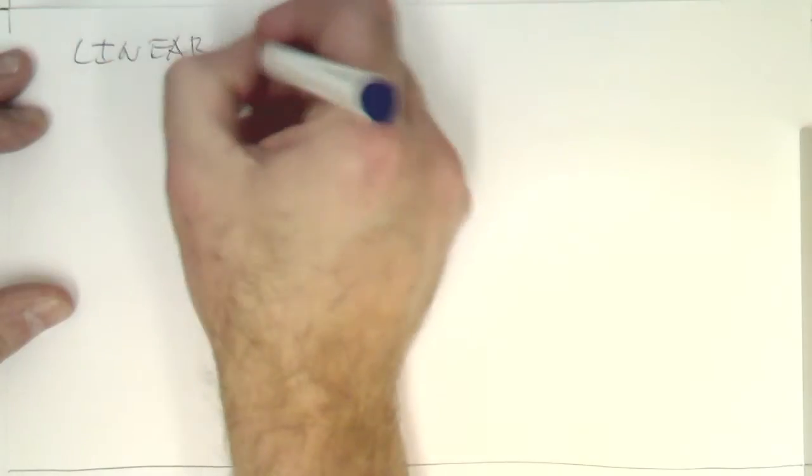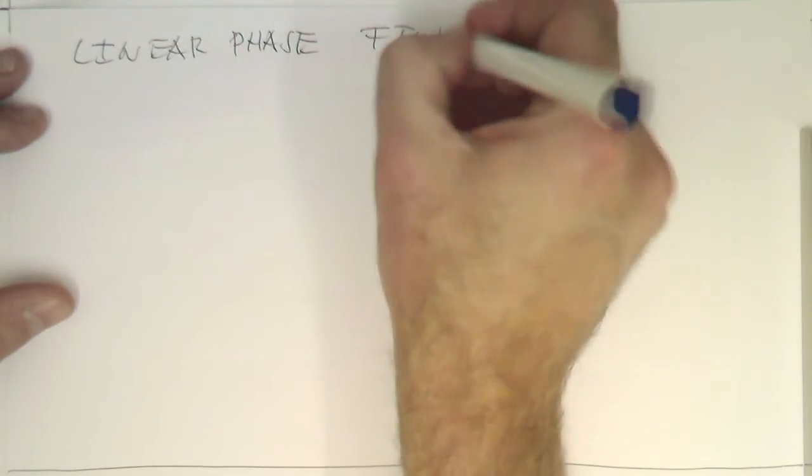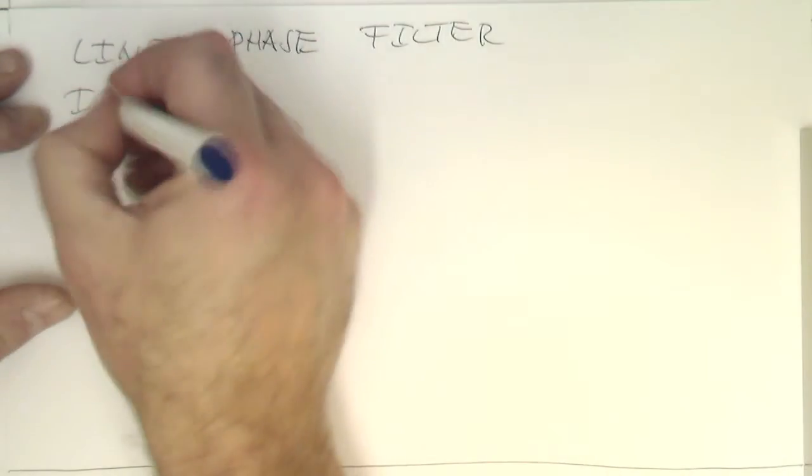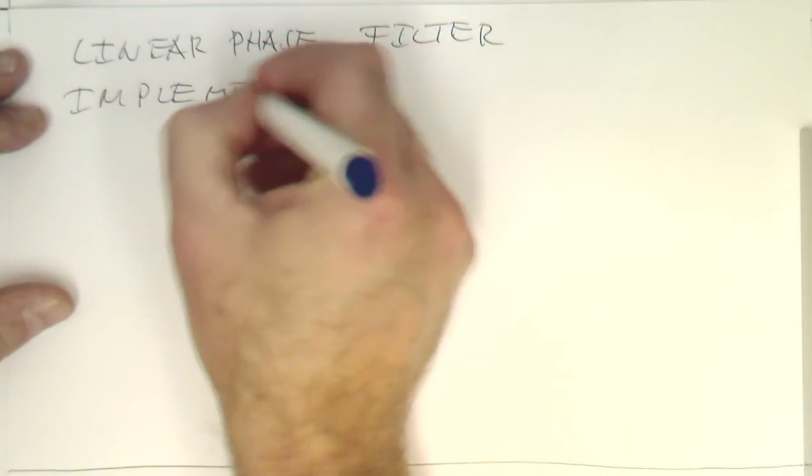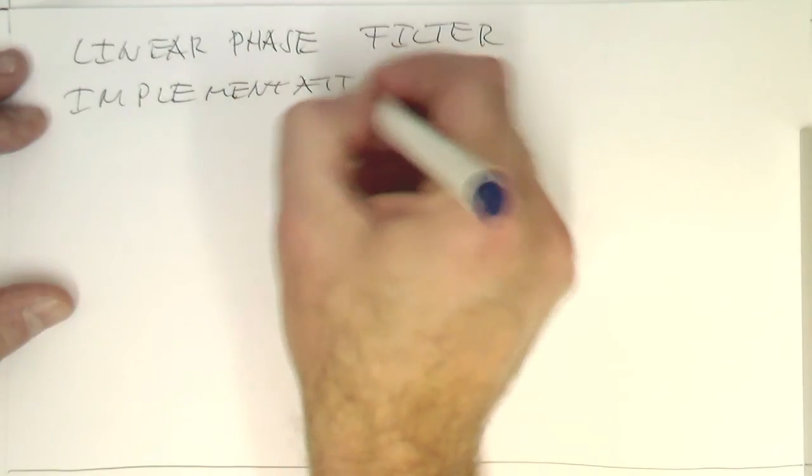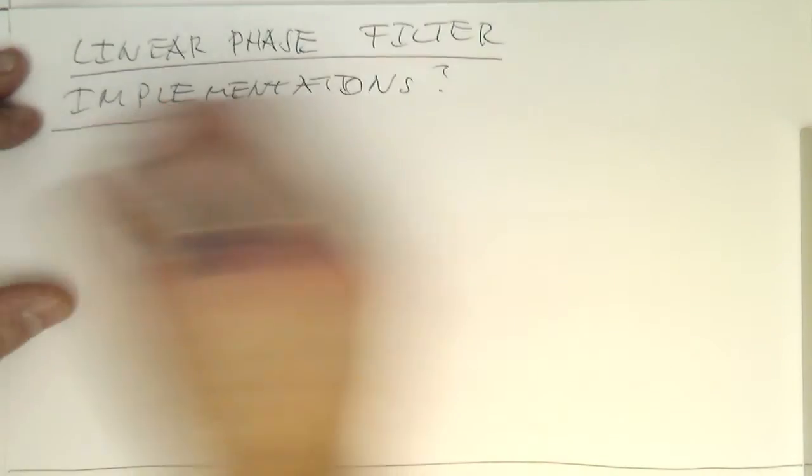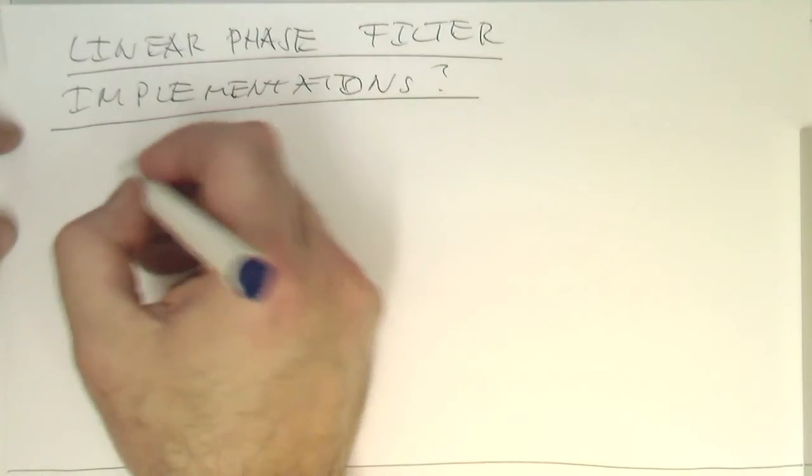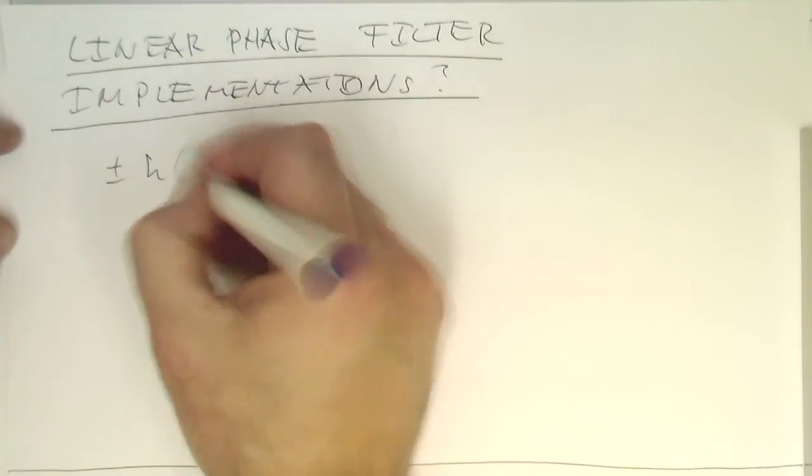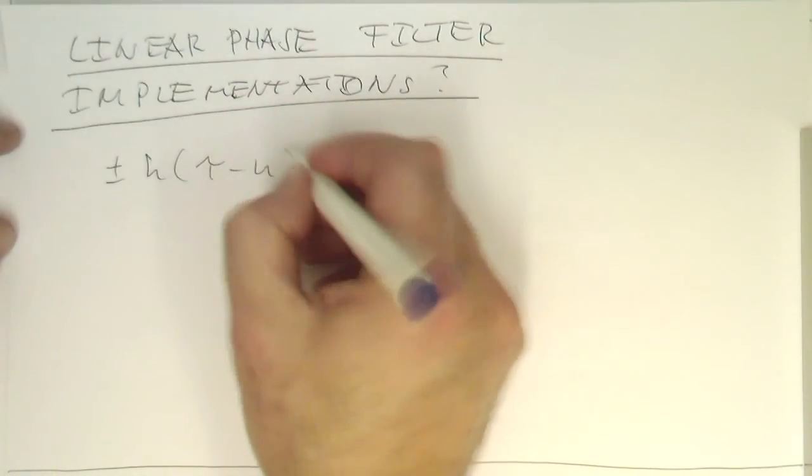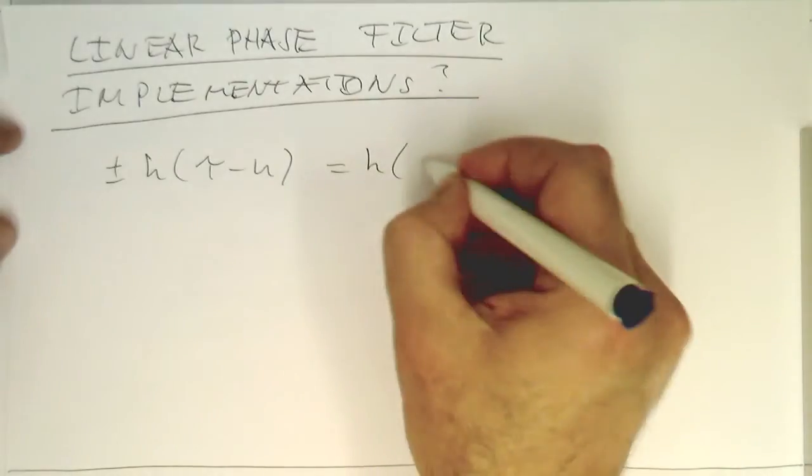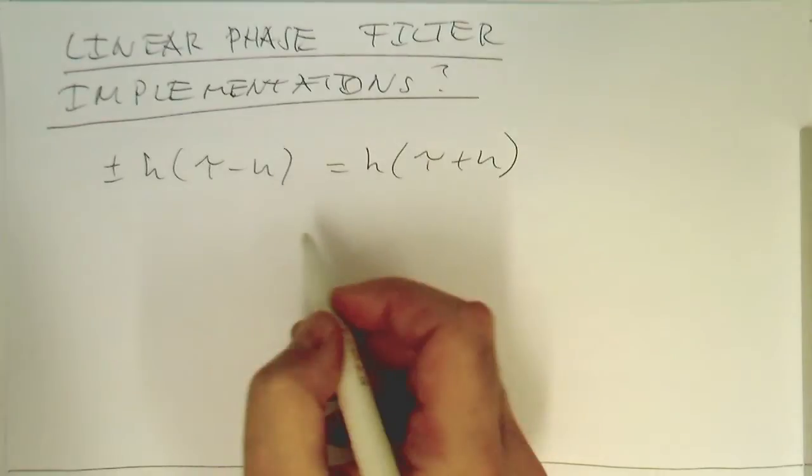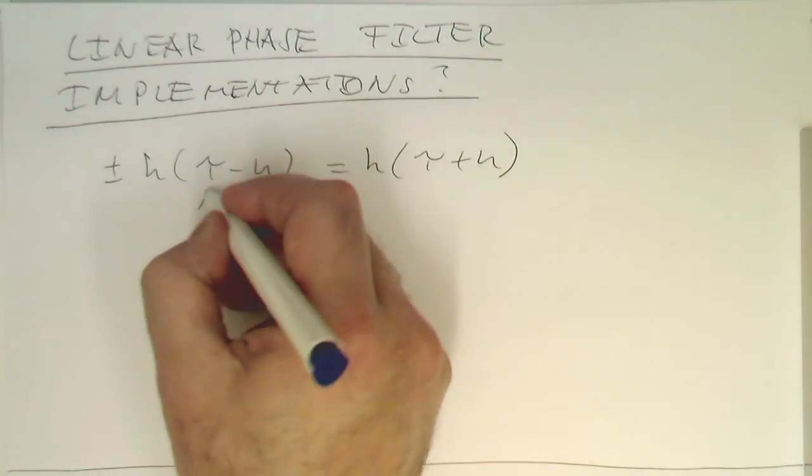Okay, so let's now look at Linear Phase Filter Implementations. So how do we do that? Remember we have got our symmetry condition here. So plus minus and then h of tau minus n equals to h of tau plus n. So this was our condition here. So what is this tau here now in the real implementation?